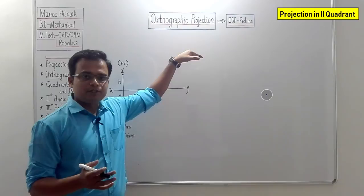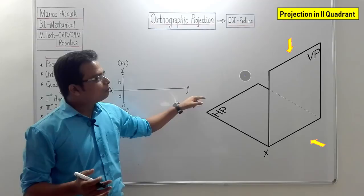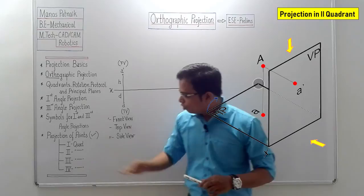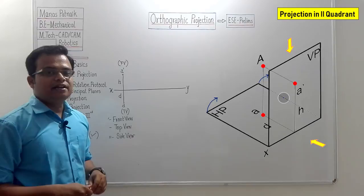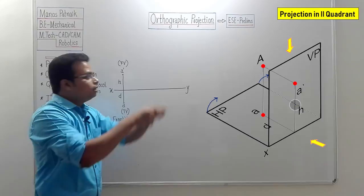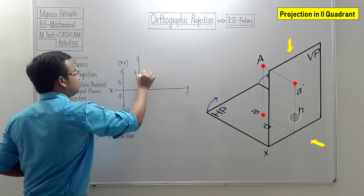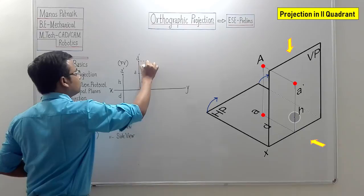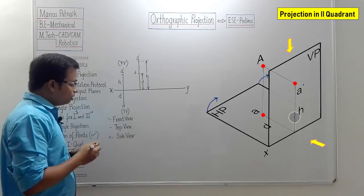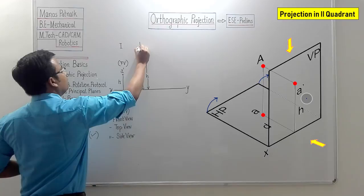For a point in the second quadrant — behind VP and above HP — the front view a' and top view a are obtained. Applying the same rotation protocol, rotating HP clockwise by 90 degrees, both dimensions h and d overlap. The result is a' and a on the same side of the XY line, with d being one distance and h being the other, overlapping above the XY line.